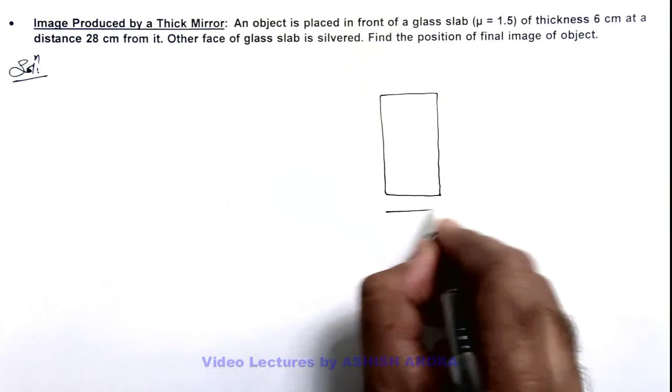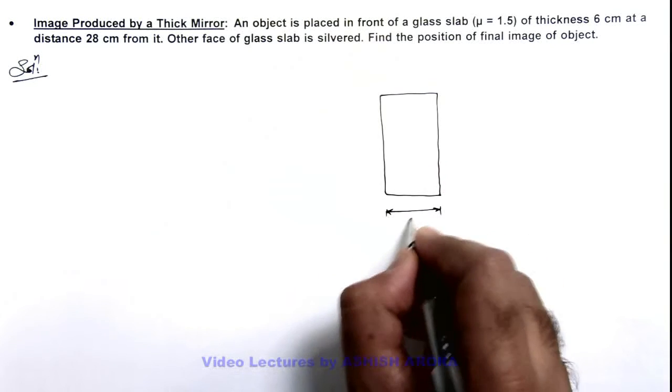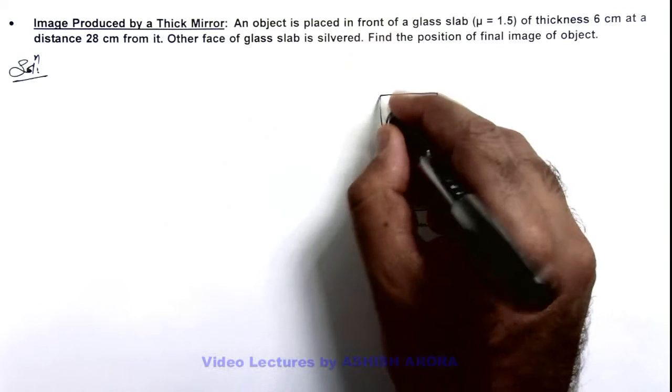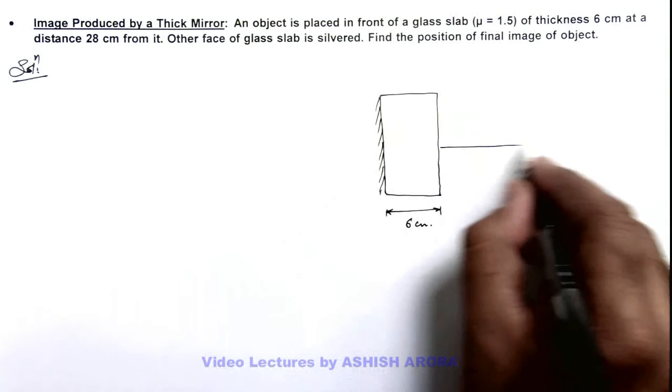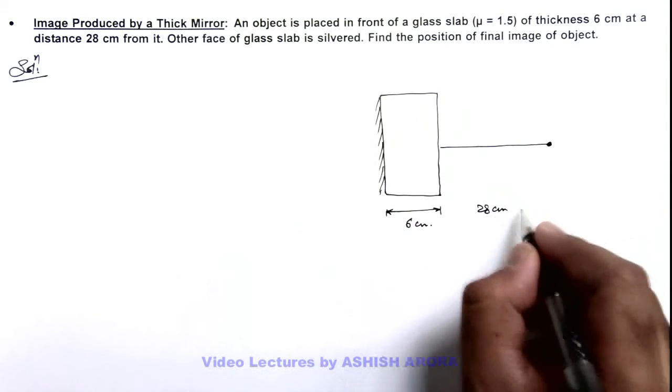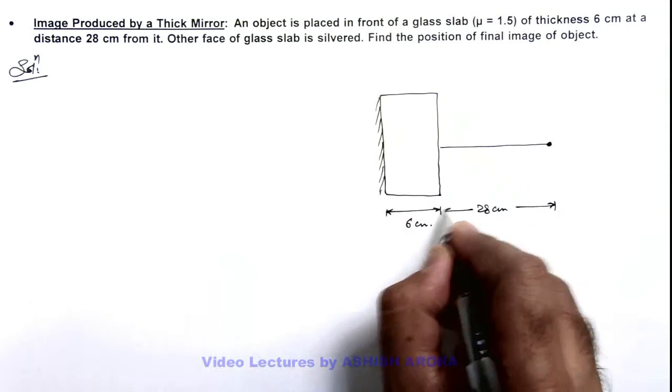Which is having a thickness of 6 centimeters, and the rear face of the slab is silvered. In front of it, an object is placed at a distance of 28 centimeters from the front face.